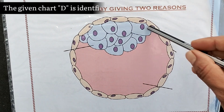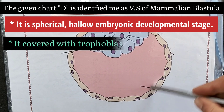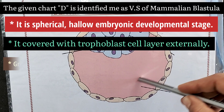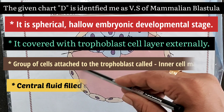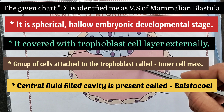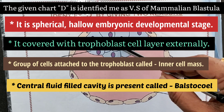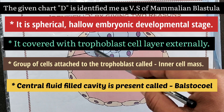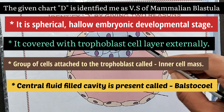The given chart D is identified as VSF mammalian blastula, meaning vertical section of mammalian blastula. It is a spherical hollow embryonic developmental stage. It is covered externally with a trophoblast cell layer. A group of cells attached to the trophoblast is called the inner cell mass. The central fluid-filled cavity is called the blastocoele.